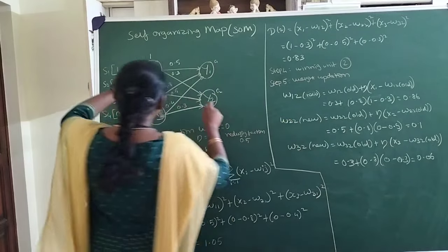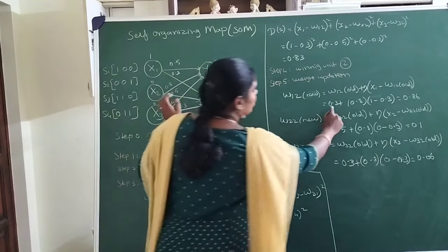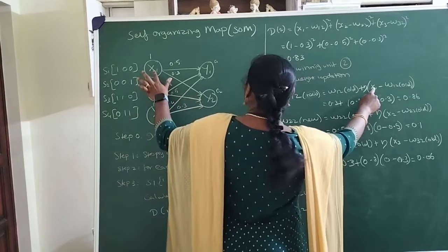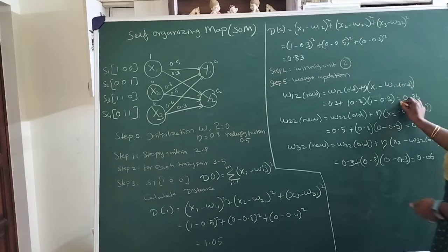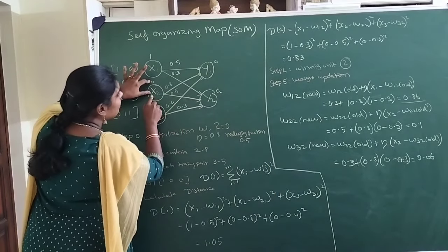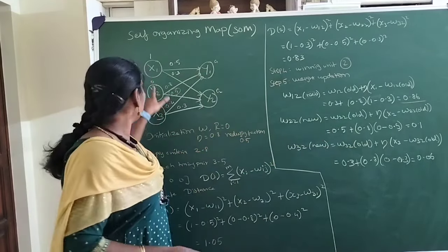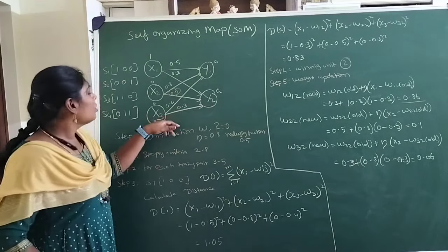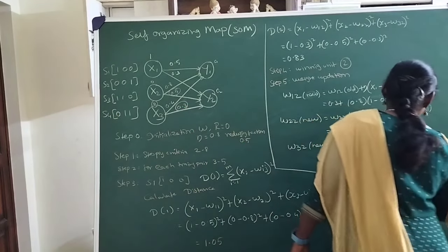For link 1-2, the old weight is 0.3 and x1 takes the value of 1. So the new weight is 0.3 plus 0.8 times (1 minus 0.3), giving the updated weight of 0.86. Similarly for link 2-2, x2 is 0 and the weight is 0.5: so 0.5 plus 0.8 times (0 minus 0.5) gives an updated weight of 0.1. For link 3-2, x3 is 0 and the weight vector is 0.3, giving the updated weight of 0.06.